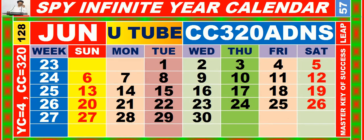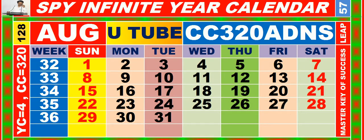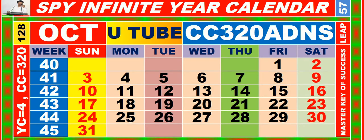Calendar for the month of June, having calendar code equal to 3, 2, 0. Calendar for the month of July, having calendar code equal to 3, 2, 0. Calendar for the month of August, having calendar code equal to 3, 2, 0. Calendar for the month of September, having calendar code equal to 3, 2, 0. Calendar for the month of October, having calendar code equal to 3, 2, 0.